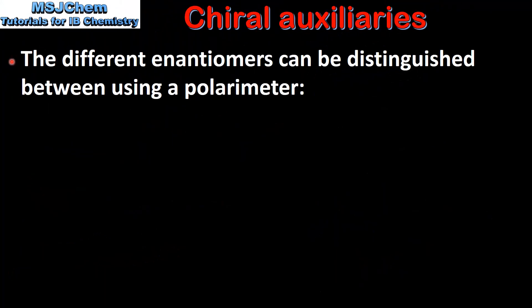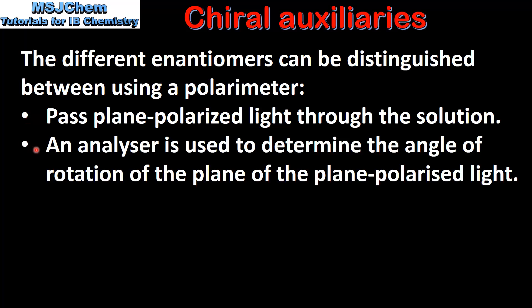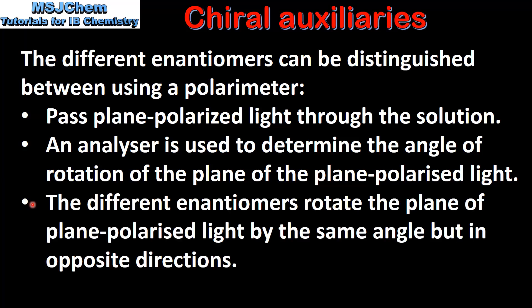The different enantiomers can be distinguished between using a polarimeter. The first step is to pass plane polarized light through the solution. An analyzer is used to determine the angle of rotation of the plane of the plane polarized light. The different enantiomers rotate the plane of plane polarized light by the same angle but in opposite directions.